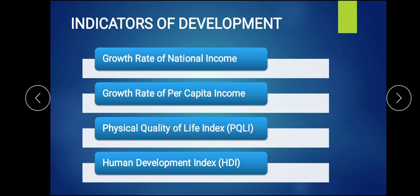Physical Quality of Life is based on three things. First is life expectancy — how many years people live in a particular country. Second is education — how many years of education does a child attain on average, and what percentage of people are literate. Third is infant mortality rate — the percentage of babies aged zero to one year that die. These three main points are considered under Physical Quality of Life.